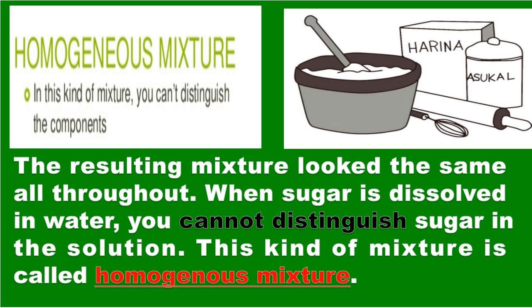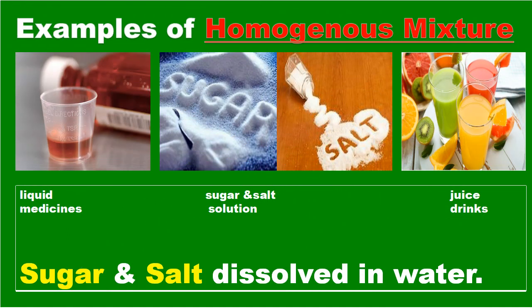Some solid materials, when mixed with other materials, cannot be distinguished from each other — the resulting mixture looks the same throughout. When sugar is dissolved in water, you cannot distinguish the sugar in the solution. This kind of mixture is called a homogeneous mixture. Examples of homogeneous mixtures include sugar and salt dissolved in water, liquid medicines, and juice drinks.